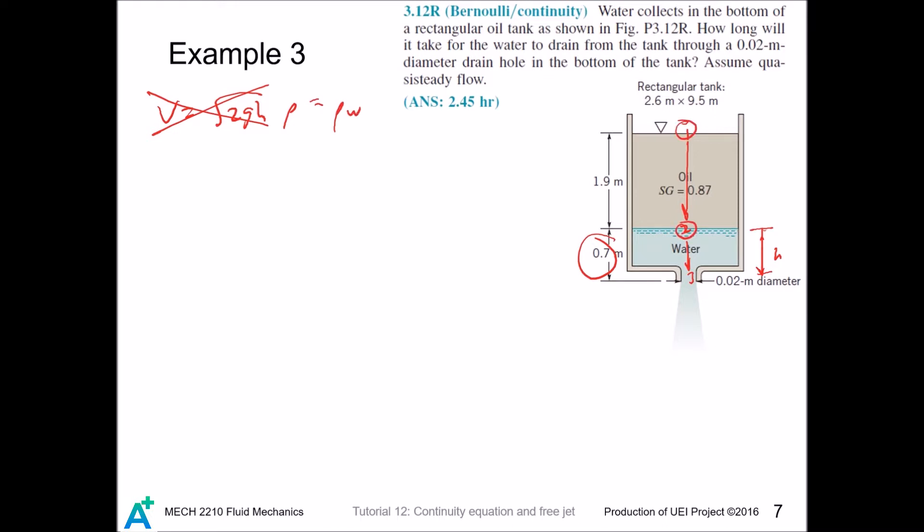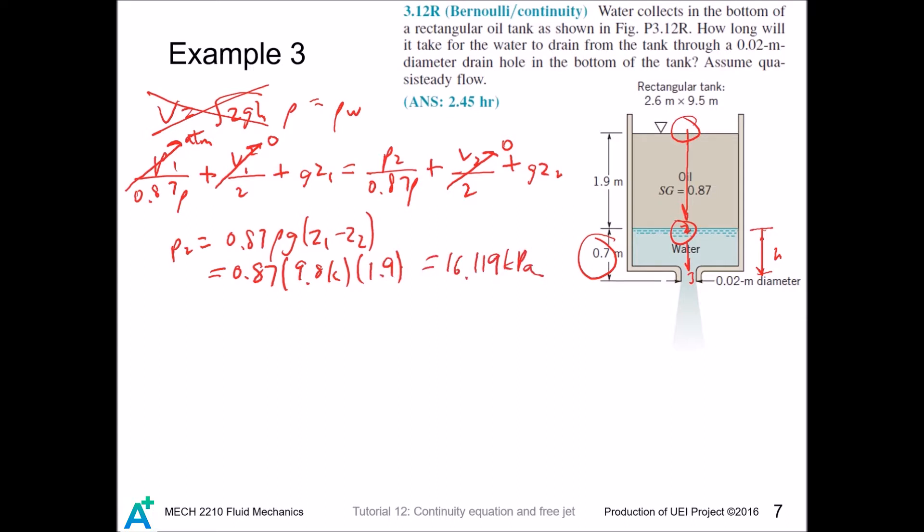Looking at points 1 and 2, we can apply Bernoulli equation. All conditions for Bernoulli equation have been satisfied. For points 1 and 2 we write p1/ρ + v1²/2 + gz1 = p2/ρ + v2²/2 + gz2. Point 1 is exposed to atmosphere so this goes zero. The two points are in the large reservoir so these two guys go zero. We're left with p2 = ρgh, which is the hydrostatic pressure. We plug in the values: water has 9.8 kN/m³ specific weight and points 1 and 2 have elevation difference of 1.9 meters.